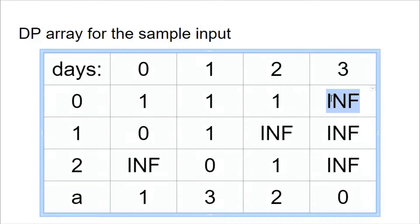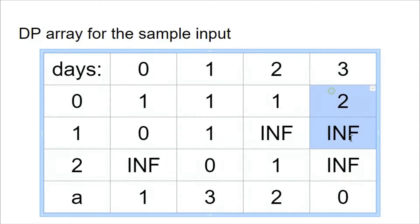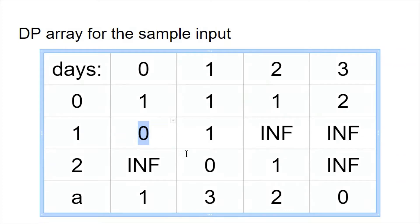For day 3 with restriction 0: we can only rest. dp[3][0] = 1 + min(dp[2][0], dp[2][1], dp[2][2]) = 1 + min(1, infinity, 1) = 2. Since restriction is 0, dp[3][1] and dp[3][2] are not updated and stay at infinity. Our answer — the minimum of dp[3][0], dp[3][1], dp[3][2] — is 2. This corresponds to the two valid paths: contest day 0, gym day 1, rest day 2, rest day 3; and contest day 0, rest day 1, gym day 2, rest day 3.